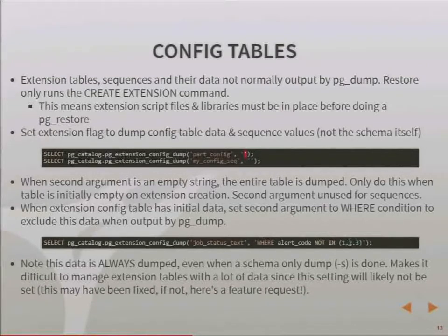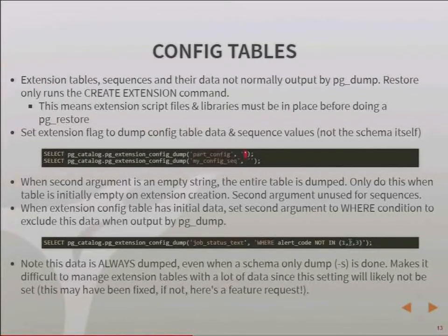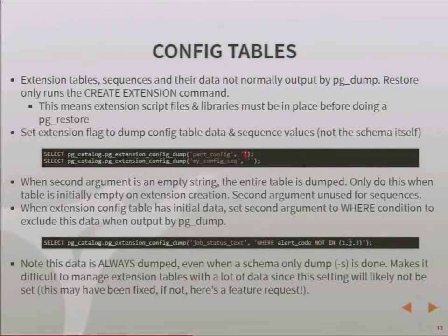The reason they did it this way is because the schema of the table is part of the extension, and when you restore the database you may not be restoring the same version — you might install a new version of the extension. When you do a restore, it installs that new version because all it does is create extension. We've actually had people run into that because they had a plain text SQL dump they were editing manually, and they added the creation of a sequence back in that was part of the extension. When they tried to run pg_restore, it ran create extension and then tried to create the sequence again — which failed because the sequence already existed.